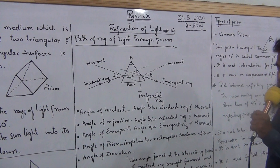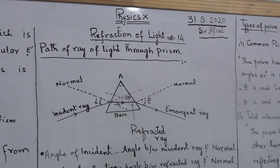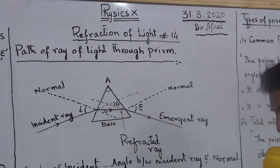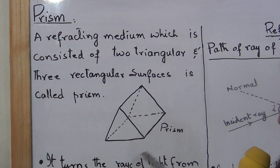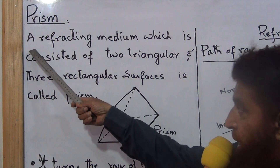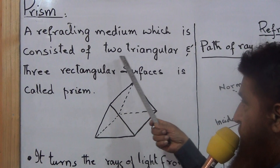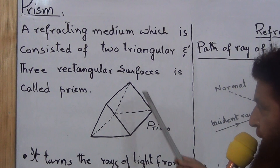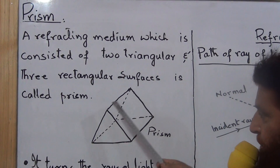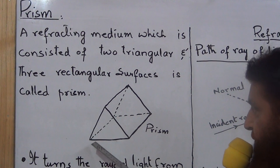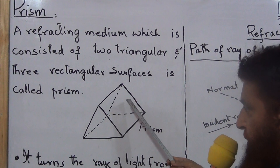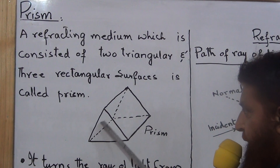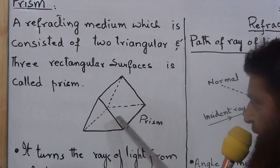Welcome, dear students. Our next topic is Chapter 14: Reflection of Light — the Prism. A prism is a refracting medium consisting of two triangular and three rectangular surfaces. It is a refracting medium because it is made of transparent glass. One surface is triangular, another is triangular, and the remaining surfaces — including the base — are rectangular.